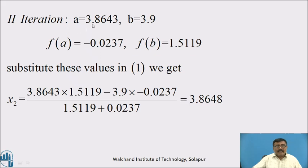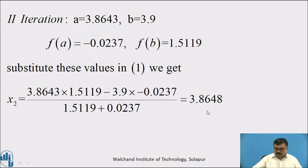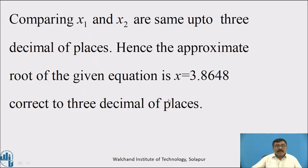Second iteration: here a = 3.8643 and b = 3.9, f(a) = −0.0237 and f(b) = 1.519. Substituting these values in equation 1 and simplifying, we get x₂ = 3.8648. Comparing x₁ and x₂, they are the same up to 3 decimal places. Hence, the approximate root of the given equation is x = 3.8648, correct to 3 decimal places.